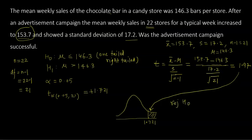Since 1.97 falls in the region of rejection, we reject H0 and accept the alternate. This means the campaign was successful — post-campaign sales are significantly higher than before.